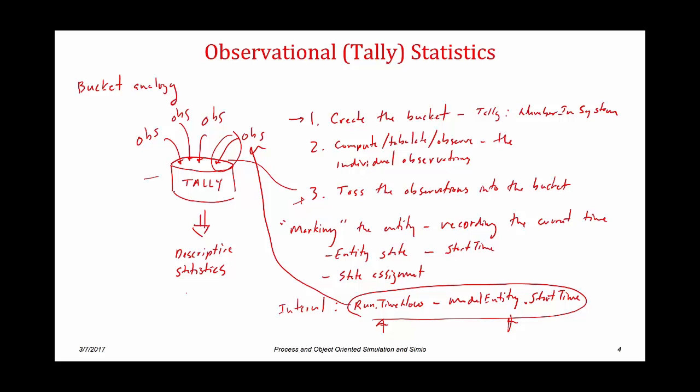The process we use is basically this three-step process. We essentially create the bucket, which means creating a tally statistic. Then we compute or tabulate or observe the individual observations, and then we toss those observations into the bucket.